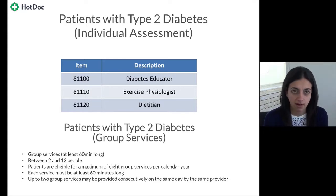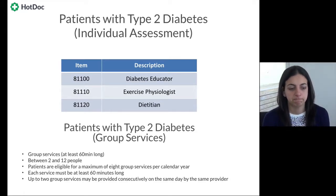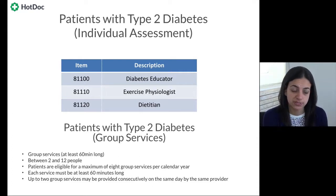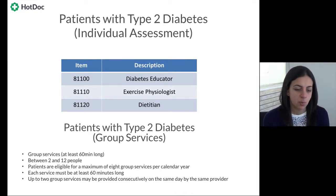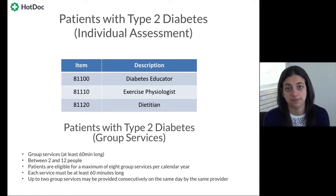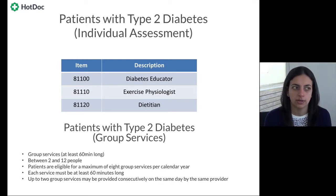To recap the Medicare items for the care of patients with diabetes: GP management plans (item 721), team care arrangements (item 723), review items (item 732) which can be claimed twice on the same day if reviewing both elements, the nurse support and monitoring item (10997) claimable up to five times in any calendar year, and the rules around how allied health referrals work.